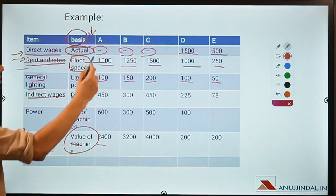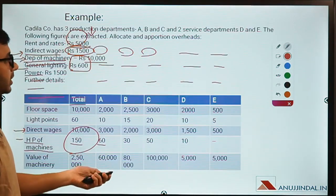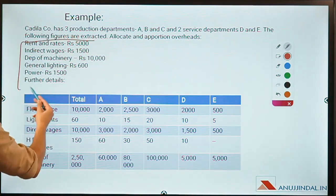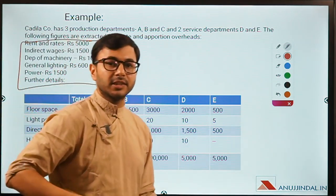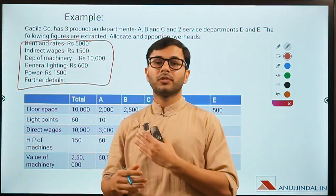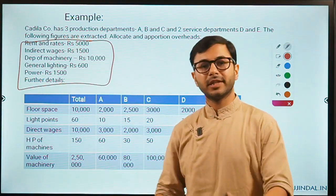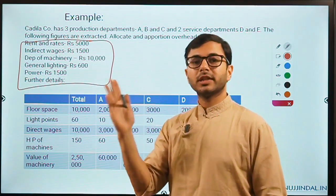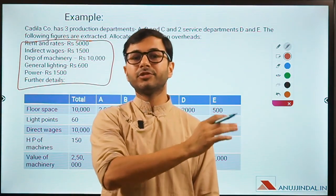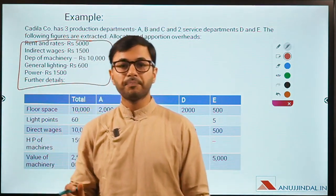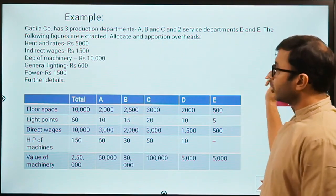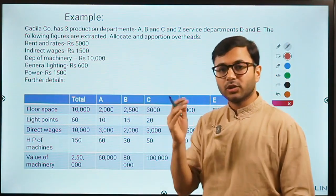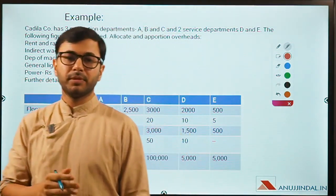Adding all of this gives the allocation of total overheads to the different departments — that is the objective of overheads. The problem is that all these expenses are obtained for the entire company. We always get electricity expense for the entire company, depreciation, general lighting, and power for the entire setup together — but we have to allocate them to different departments to figure out how much each department has contributed to that expense.